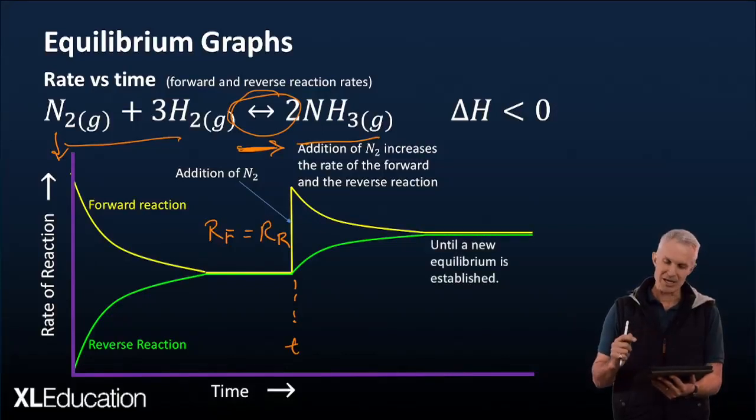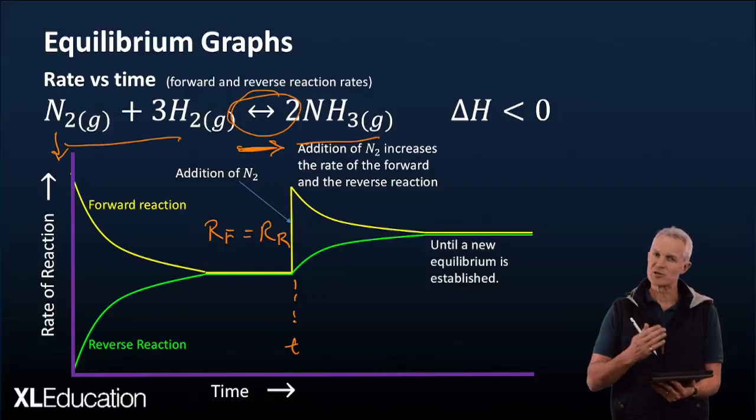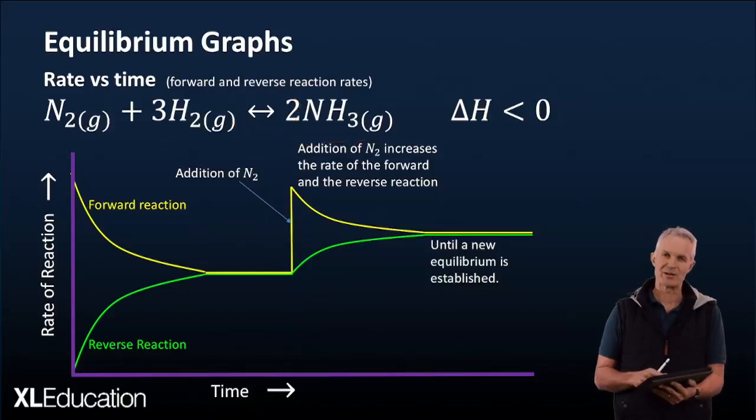So there will be a spike in the one that has more substance added to it. So that's how those two graphs will be affected by a change in concentration. Let's have a quick look at the other changes you might encounter and see what those graphs might look like.